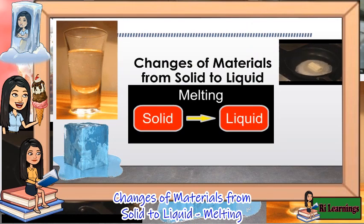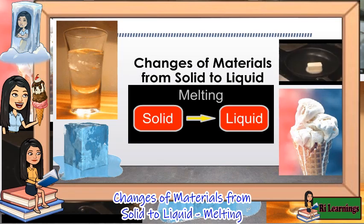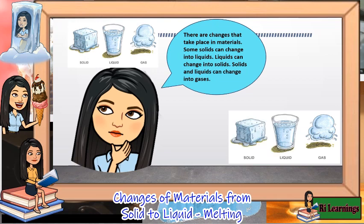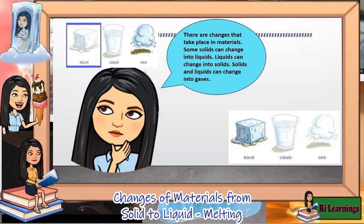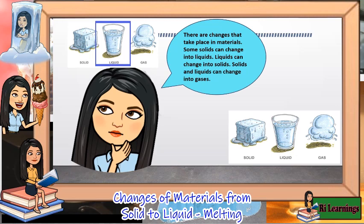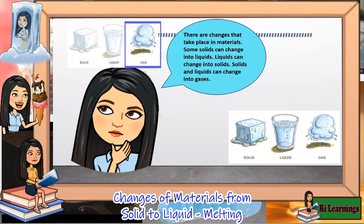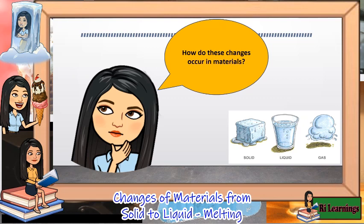Changes of materials from solid to liquid. Do you know that there are changes that take place in materials? Some solids can change into liquids. Liquids can change into solids. Solids and liquids can change into gases. The question is, how do these changes occur in materials? Let's find out.